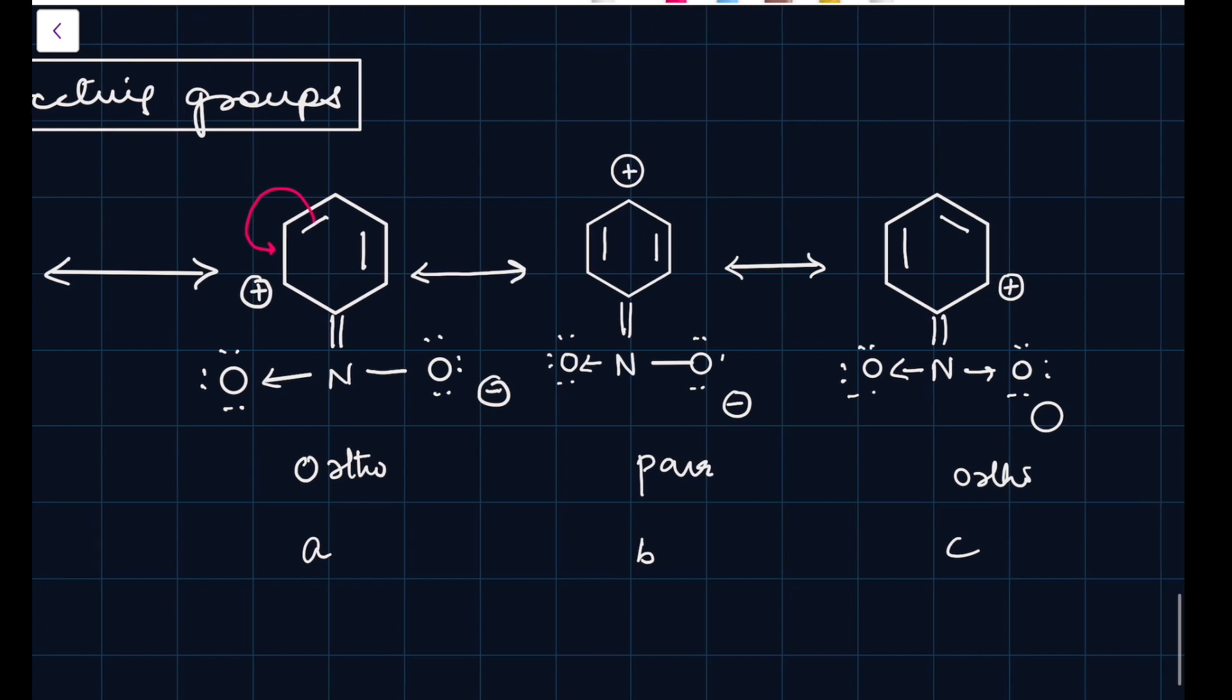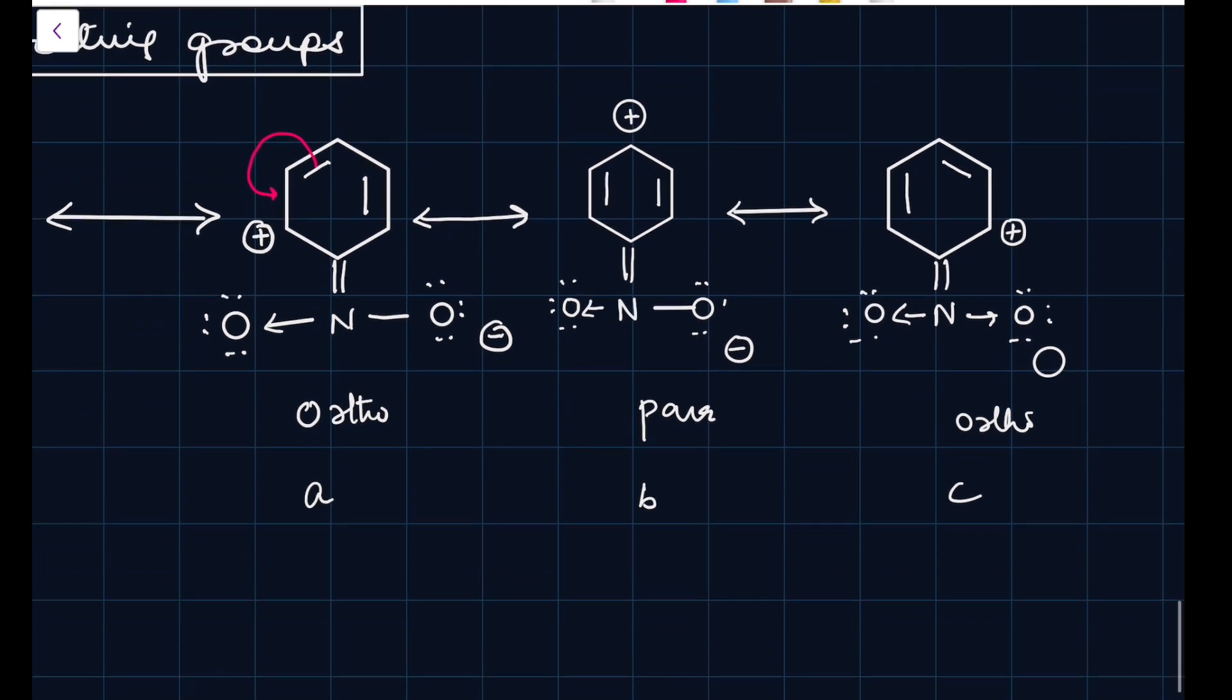The next diagram is going to be these electrons bonded will be shifted here. You see that the positive charge is moving at ortho position, para position and the next resonating structure is going to be, as expected, it will go to the next ortho position, the rest all remain same.